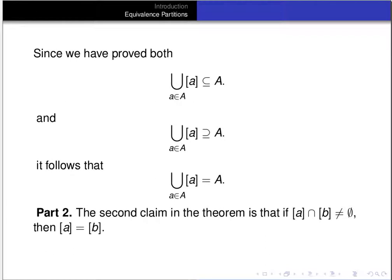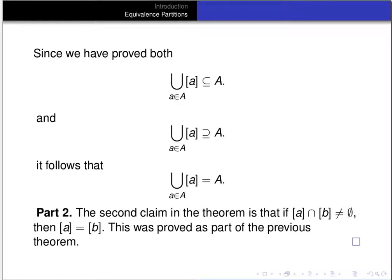The other claim in the theorem was that if the intersection of two equivalence classes is not empty, then those equivalence classes are identical. This was proved as part four of the previous theorem and was done in a previous video.